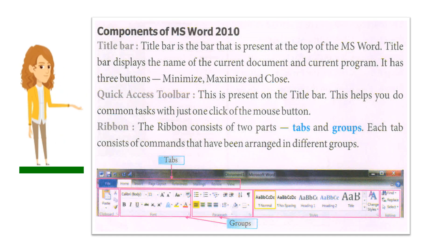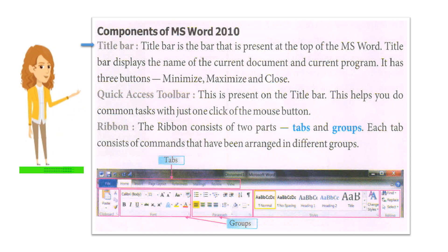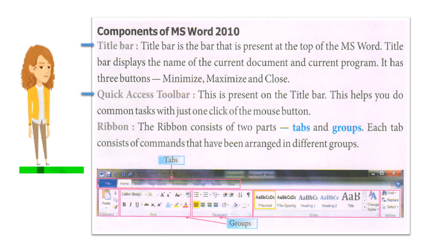Components of MS Word 2010. Title Bar: The Title Bar is the bar present at the top of MS Word. It displays the name of the current document and current program. It has three buttons: Minimize, Maximize, and Close. Quick Access Toolbar: This is present on the Title Bar and helps you do common tasks with just one click of the mouse button.